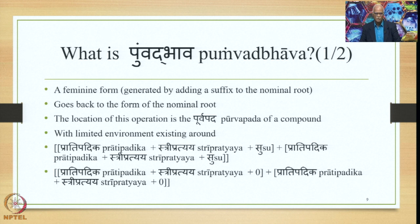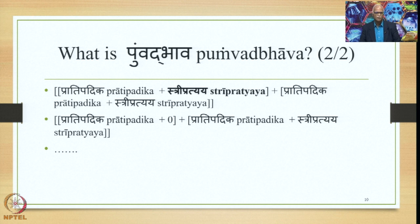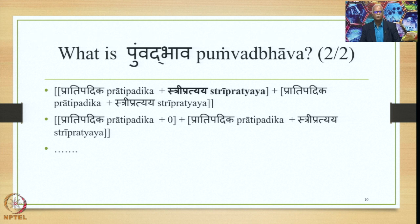The operation can be stated as an equation: Purvapada Pratipadika plus Stripratyaya plus Su, and Uttarapada Pratipadika plus Stripratyaya plus Su. Samasa Saudhnya and Pratipadika Saudhnya take place, then Su gets deleted by the Sutra Supodhatu Pratipadika Yoho. So we have Pratipadika plus Stripratyaya plus zero, plus Pratipadika plus Stripratyaya plus zero. Pumbad Bhava tells us that the Stripratyaya in the Purvapada disappears — the Pratipadika plus Stripratyaya form goes back to the Pratipadika form. This is called Pumbad Bhava in a nutshell.